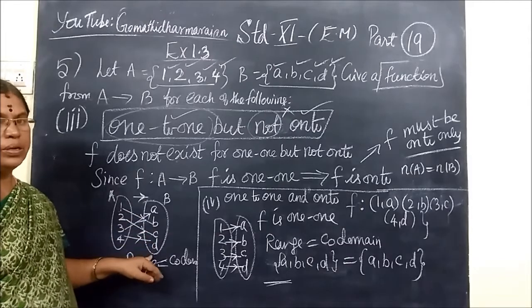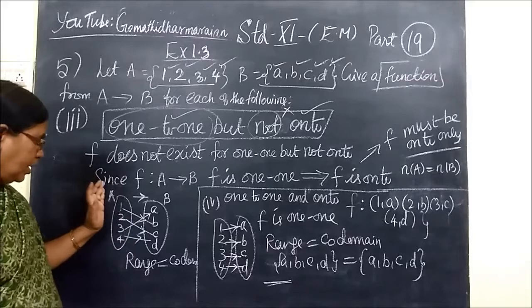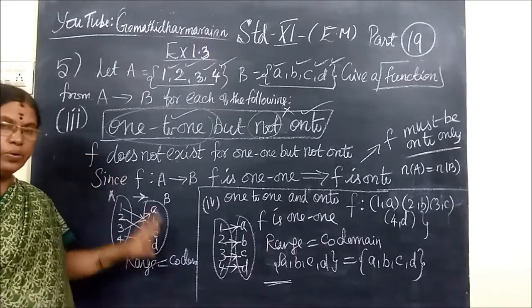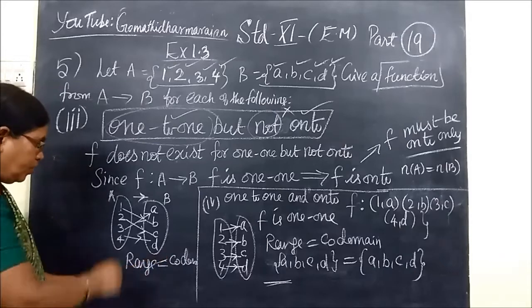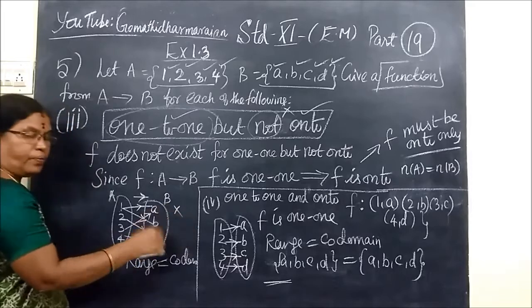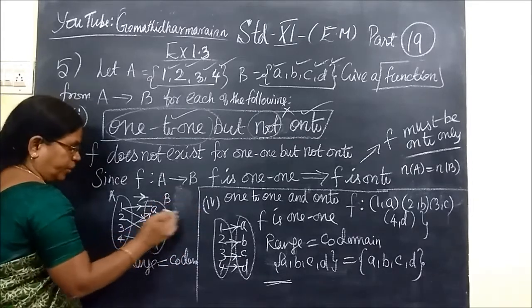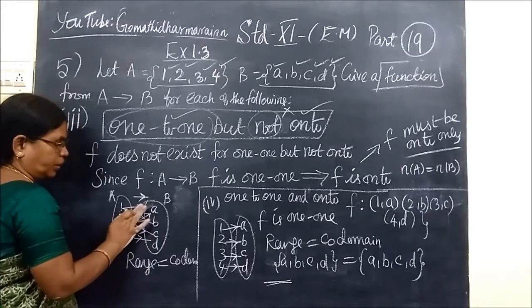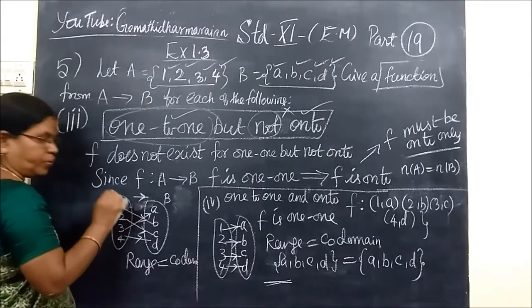But one should be associated with one element only. Two elements associated, that is not a function. Because every element in A should have a unique image in B. The image must be unique. Suppose one element maps to two images, this is not a function. F is not a function. But f is already a function. So when you select the image, you should be careful with it.